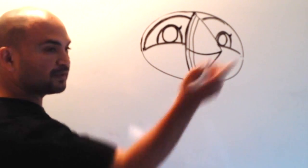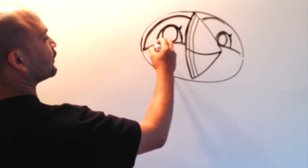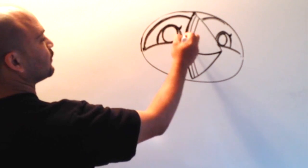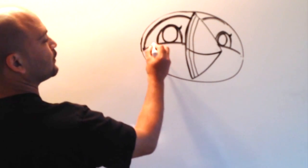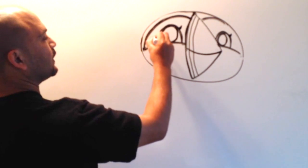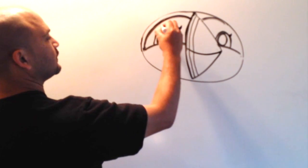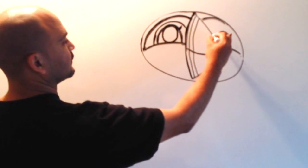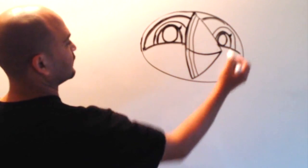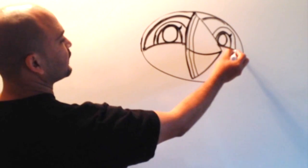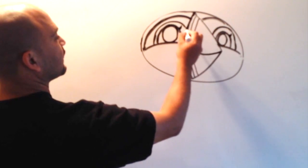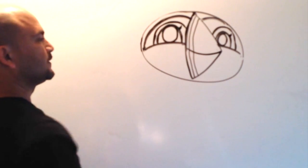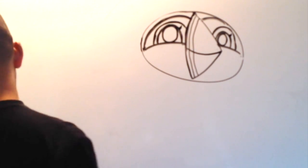Alright. Believe it or not, there is yet another curved line that goes around the top of the eye. So we're going to just go around. Just like that. So we're going to make two curved lines that go around the eye.